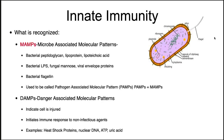After that brief introduction, it's time to start talking about innate immunity. Innate immunity recognizes things in your body that are foreign, then reacts against them and tries to eliminate them. What's recognized? First, MAMPs — microbe-associated molecular patterns. These include things like bacterial peptidoglycan, lipoproteins, lipoteichoic acids, lipopolysaccharide, fungal mannose, viral envelope proteins, and bacterial flagellin.